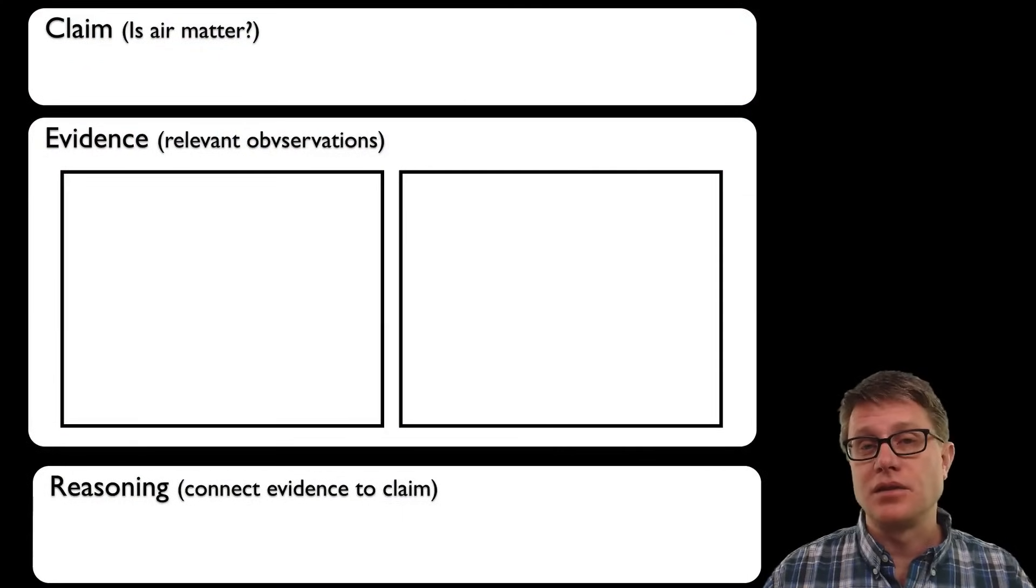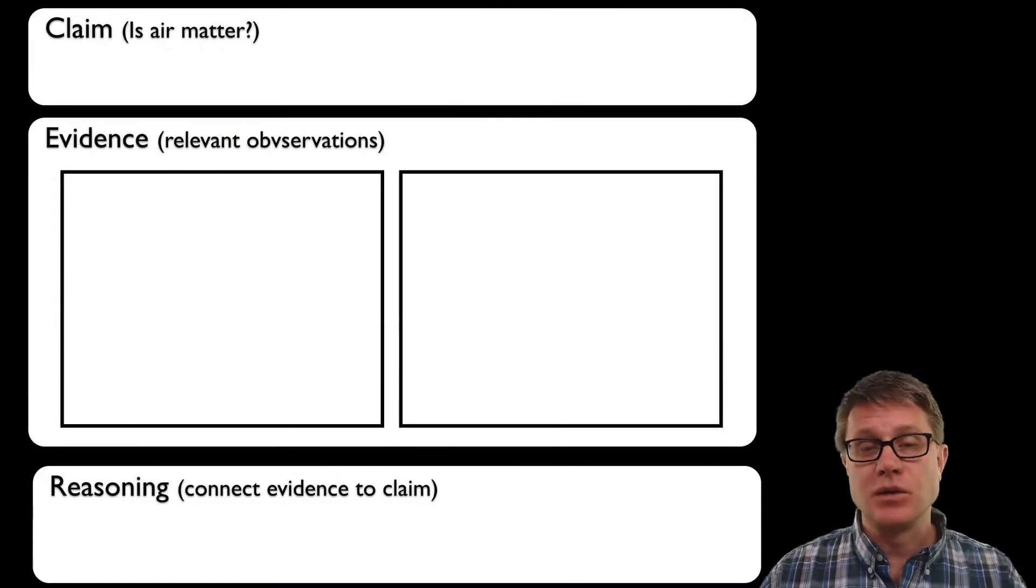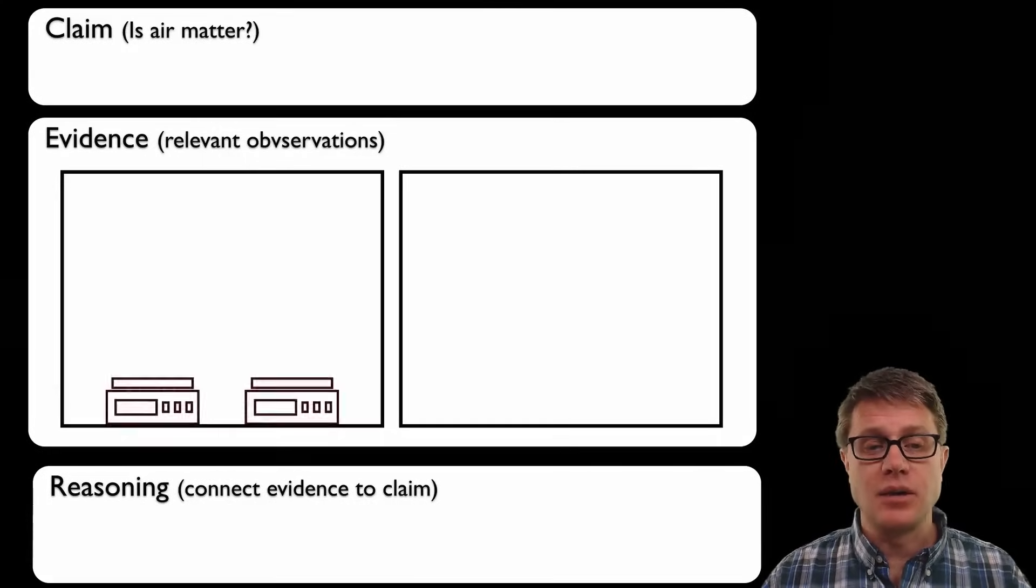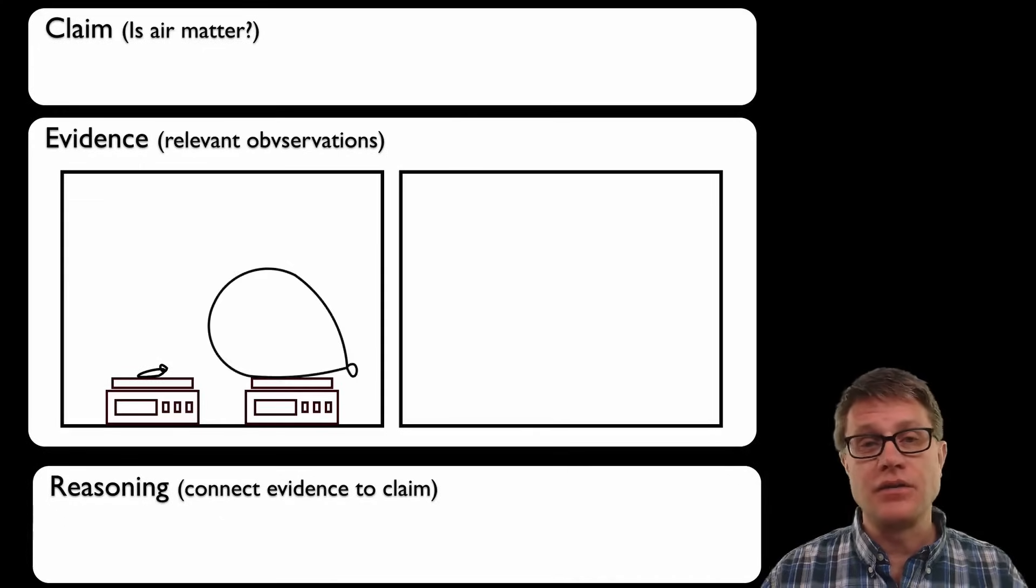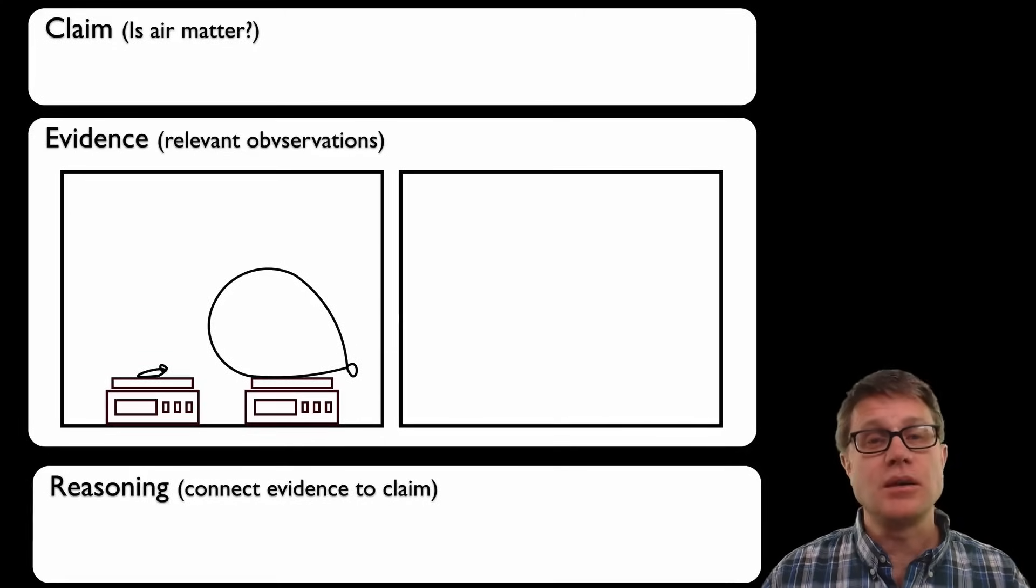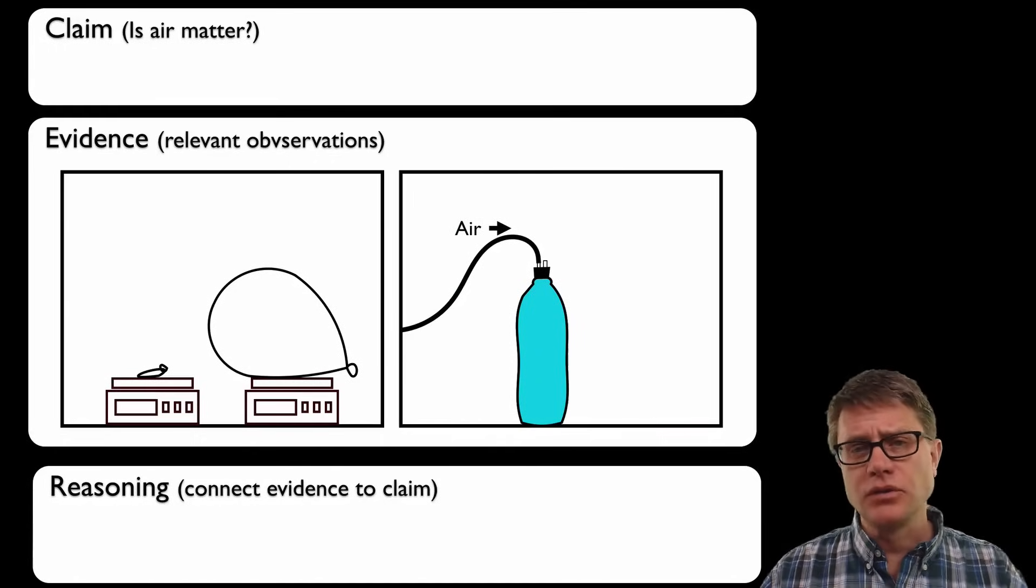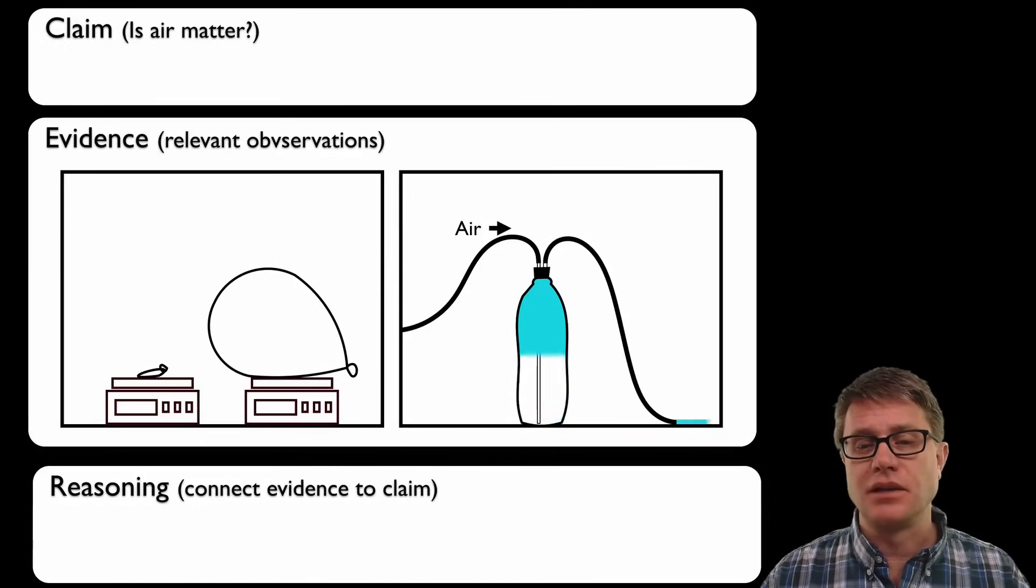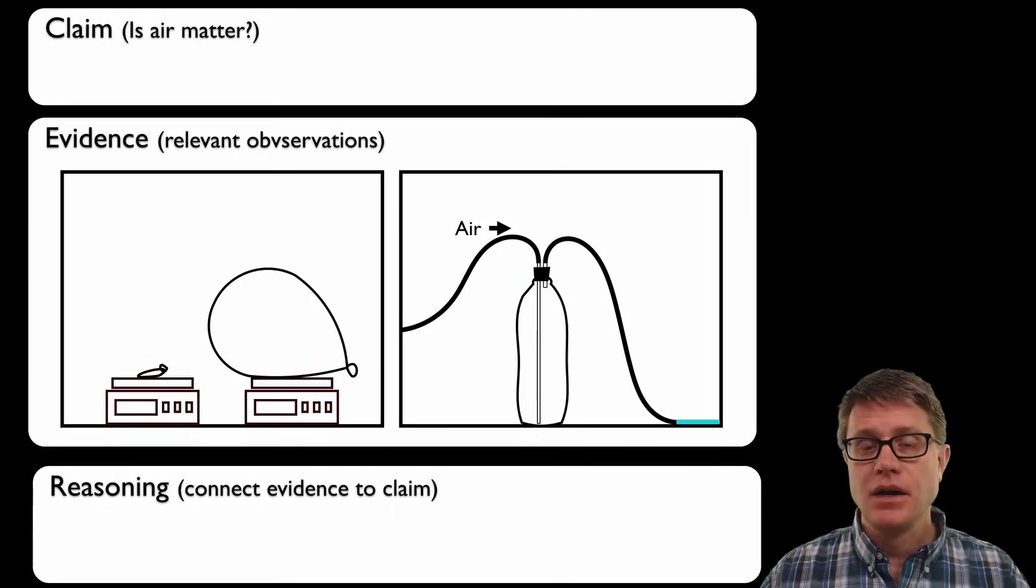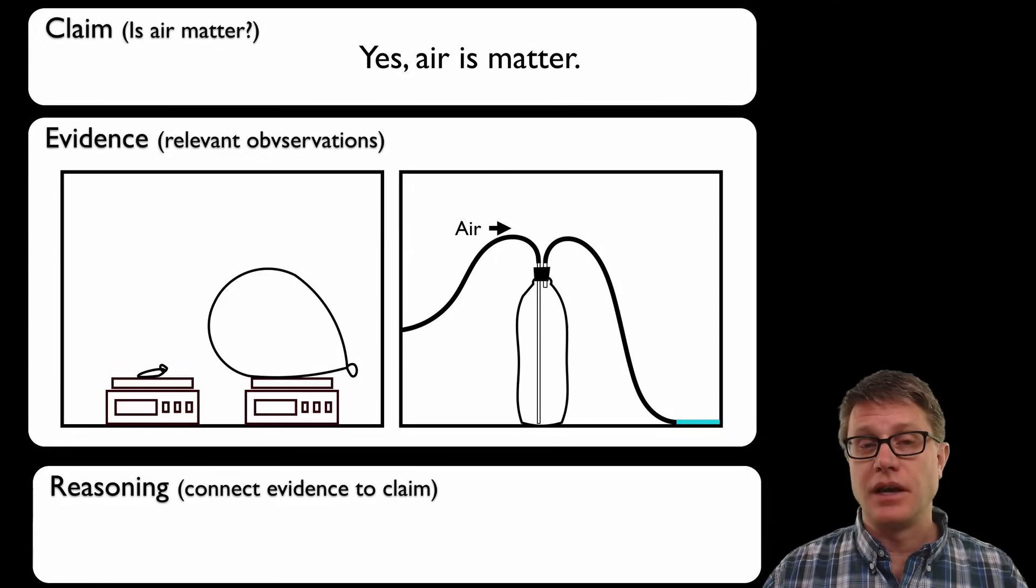Now we can use a form like this to do our claim evidence reasoning. Claim is going to be an answer to the question, but generally we don't start there. We have to start by gathering evidence. So perhaps I take a balloon, put it on a scale and then I fill up a balloon and put it on the same scale. I'm trying to show that there's an increase in mass. And then maybe I want to look at the takes up space side of the matter. Maybe I take a bottle filled with water, pump air into it and I can displace some of that water. And so now I can make a claim. Yes, air is matter. That's going to be my claim.